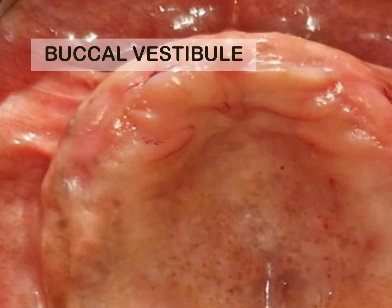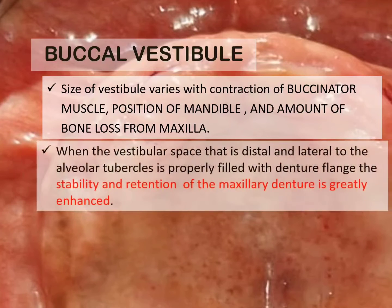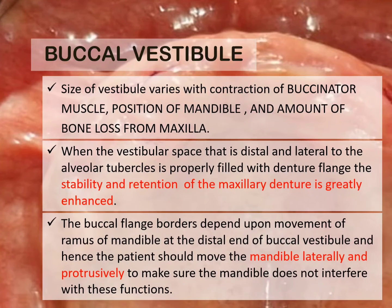The buccal vestibule is bounded anteriorly by the buccal frenum, laterally by the buccal mucosa, and medially by the residual alveolar ridge. The size of the vestibule varies with contraction of the buccinator muscle, the amount of bone loss from the maxilla, and the position of the mandible — when the mandible opens or moves to the opposite side, the width of the buccal vestibule is reduced. When the vestibular space distal and lateral to the alveolar tubercles is properly filled with the denture flange, the stability and retention of the maxillary denture is greatly enhanced. The buccal flange border depends upon the movement of the ramus of the mandible at the distal end of the buccal vestibule, and the patient should move the mandible laterally and protrusively to ensure the mandible does not interfere with these functions.